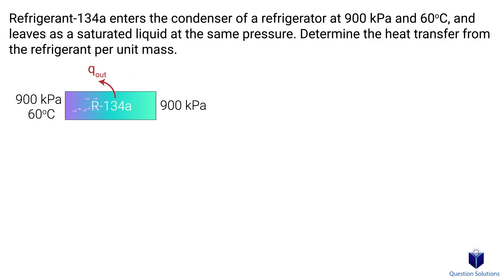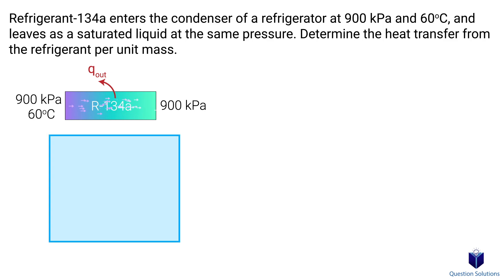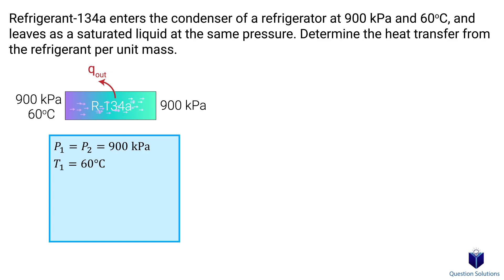In this question, we're told that R134a enters and leaves a condenser. We need to figure out the heat transfer from the refrigerant per unit mass. The refrigerant enters the condenser at 900 kPa with a temperature of 60°C and leaves as a saturated liquid at the same pressure. So all we need to do is figure out the heat loss during this process.